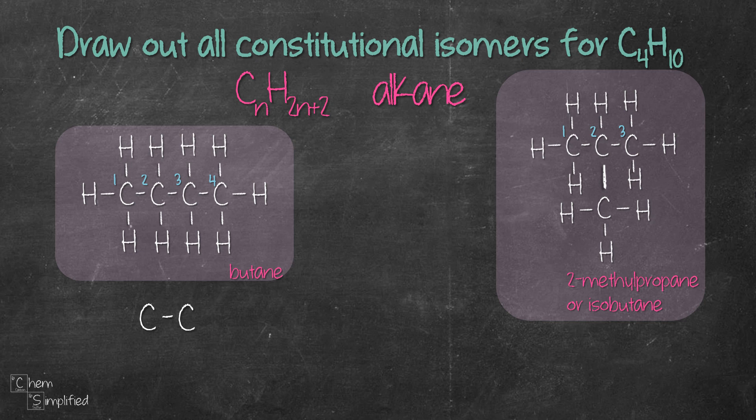So if I place one carbon on each of the carbons like this, in reality it is the same as our first isomer because you can count four carbons straight in a row like this.